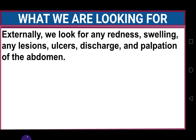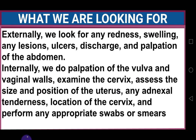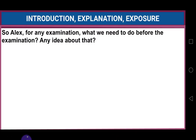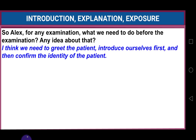We do per speculum examination to look at the external and internal female reproductive organs for any abnormality. During the examination we do external examination looking for redness, swelling, lesions, ulcers, or discharge, and we also palpate the abdomen. Internal examination includes palpation of the vulva and vaginal walls, examination of the cervix, assessing the size and position of the uterus, any adnexal tenderness, location of the cervix, and appropriate swabs or smears. Before starting the examination, we need to do certain things — let me explain these.